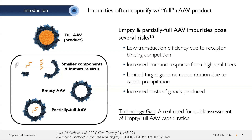In fact, many processes produce far more empty particles than full ones. The risks from these impurities include low transduction efficiency due to receptor-binding competition, increased immune response from high viral titers, and limited targeted genome concentration due to capsid precipitation, and increased cost of goods produced.